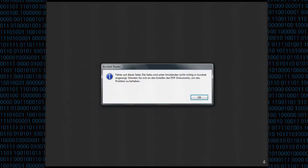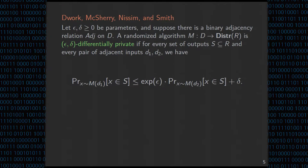So, what is differential privacy? The basic idea is that differential privacy is a property of a randomized algorithm, sometimes called a mechanism. This algorithm takes in a database as input and produces a randomized output in some range. I can think of the database as consisting of a bunch of records of different individuals. If I consider two databases that differ in a single individual's record, then the two resulting distributions over outputs should be similar.